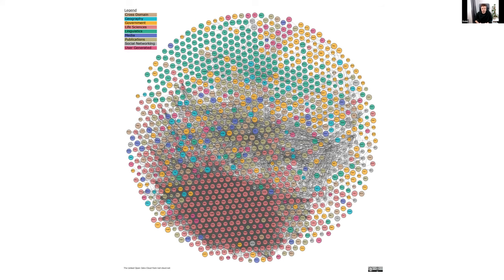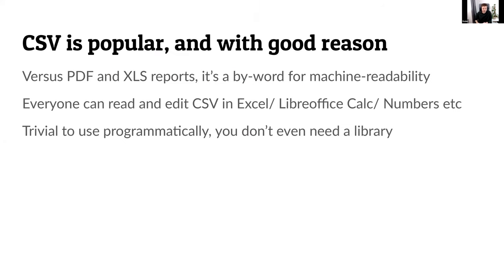Putting CSVs on the web lets us integrate into the linked open data cloud. Connecting datasets together allows us to enrich the value of each. CSV really meant machine-readable access ten to fifteen years ago — APIs were a mythical creature. We shouldn't drop the humble CSV in our excitement for machine-to-machine communication. CSV serves non-technical users very well; everyone can read and edit CSV files in a spreadsheet or text editor, and technical users will find them trivial to work with programmatically.